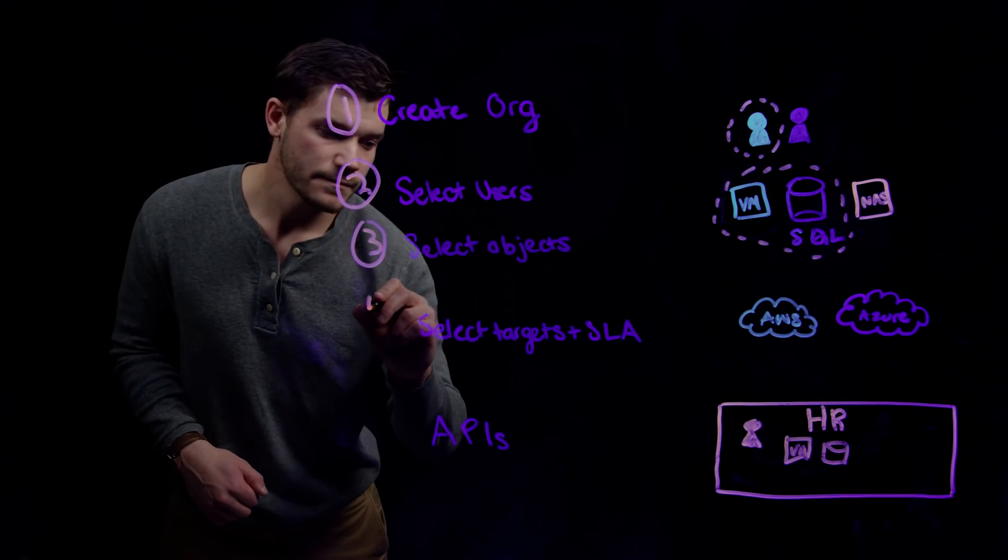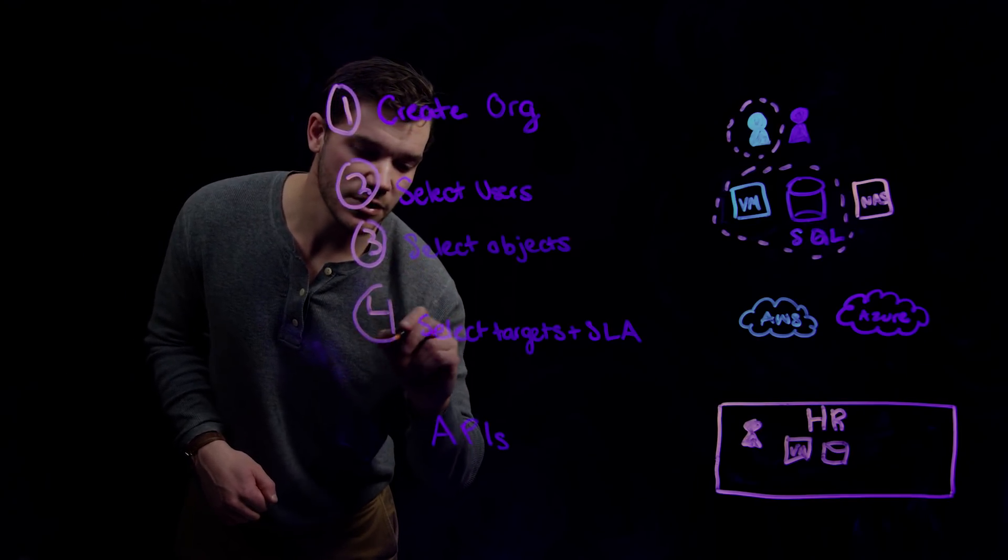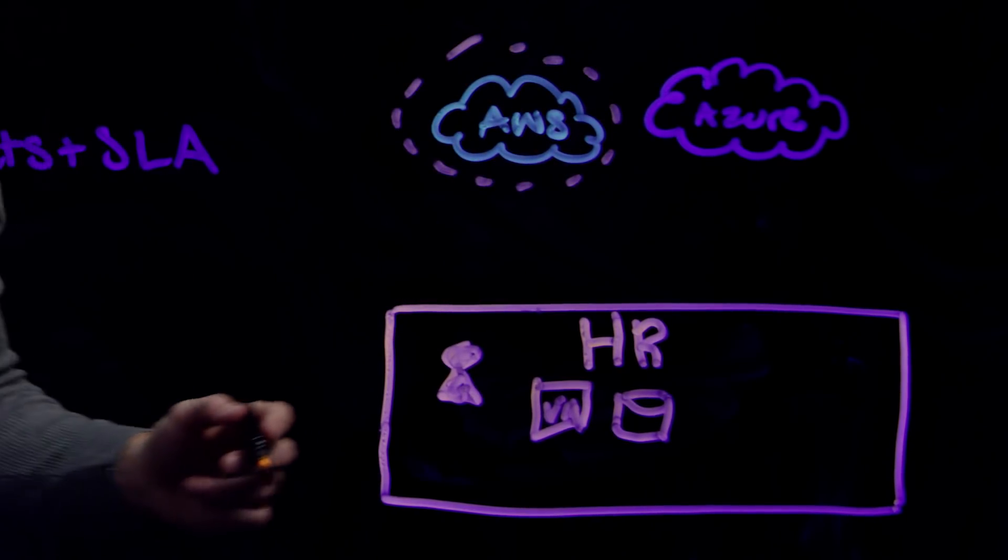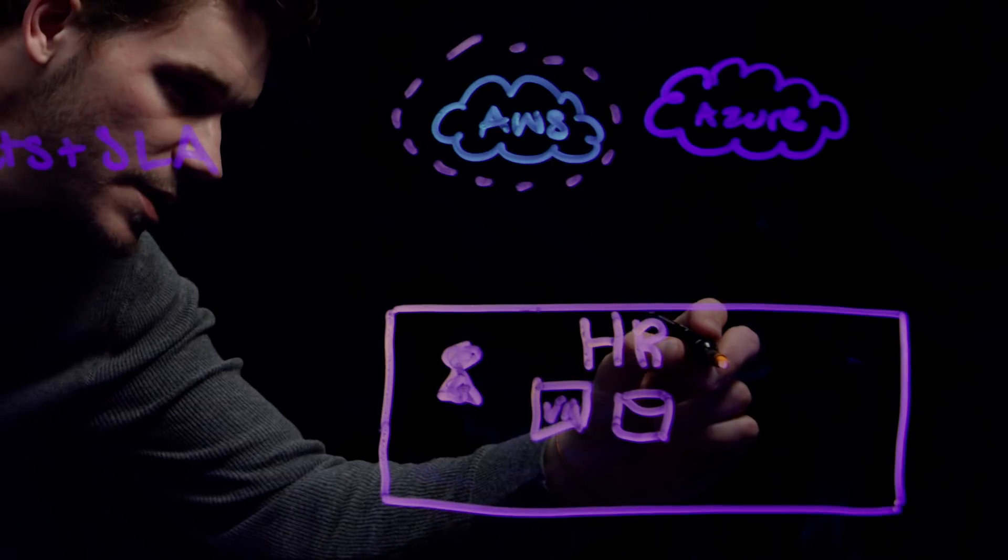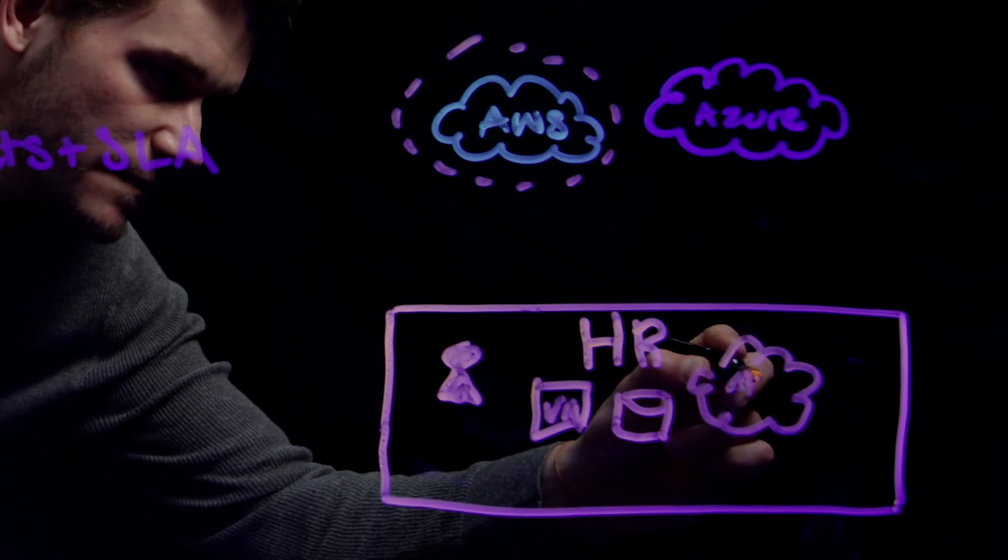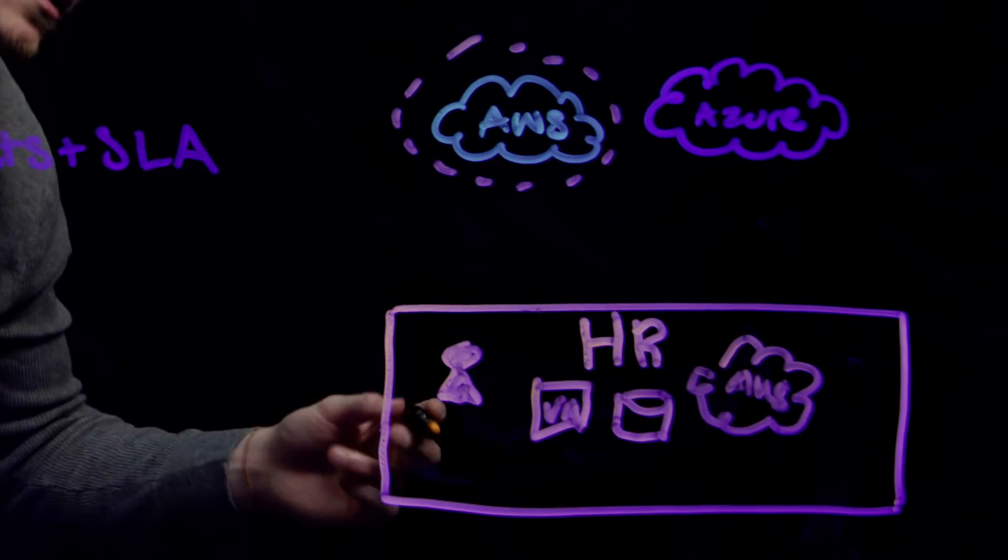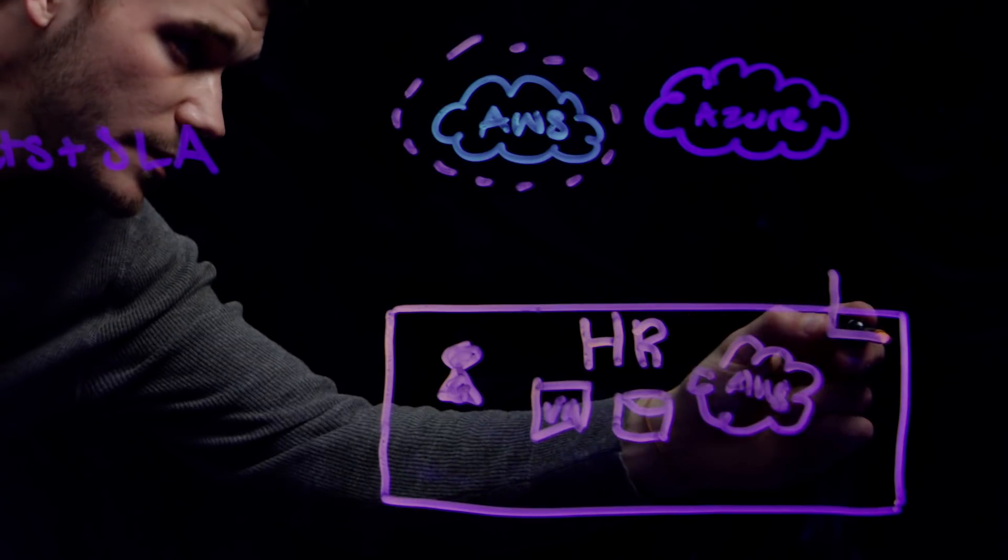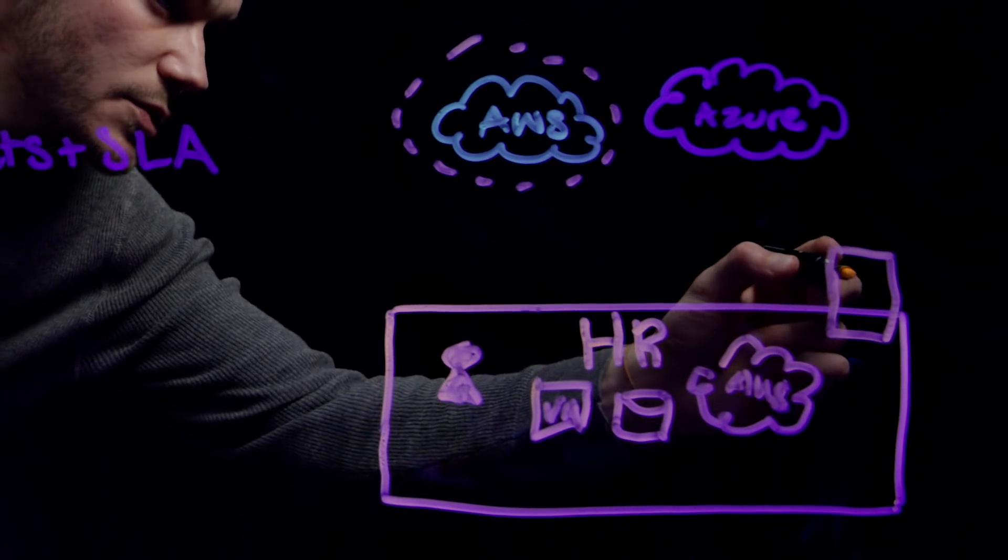The fourth step is to select the various archive targets as well as select any SLA domains. Here we add an AWS archive location, but you can add any of the major cloud provider locations, and we'll attach the gold SLA.